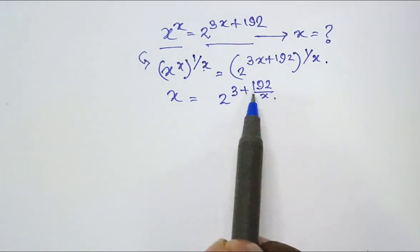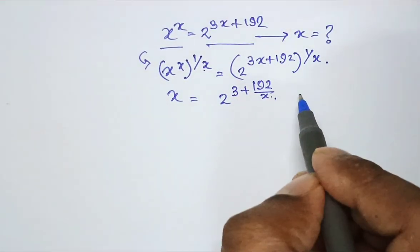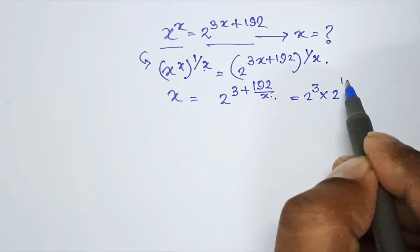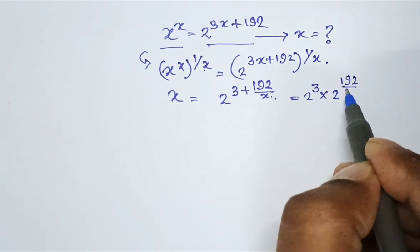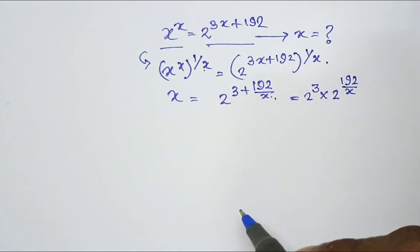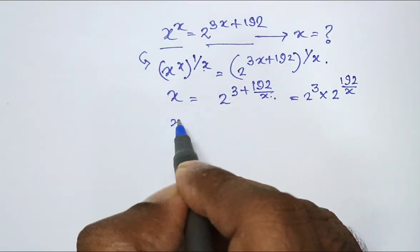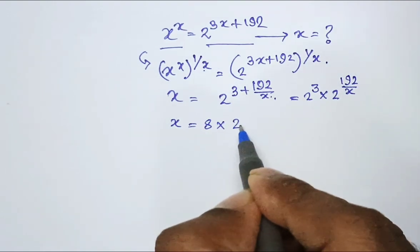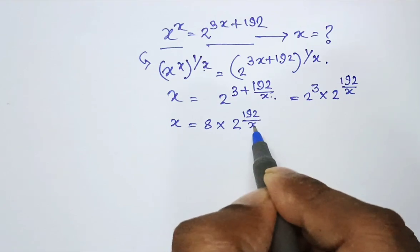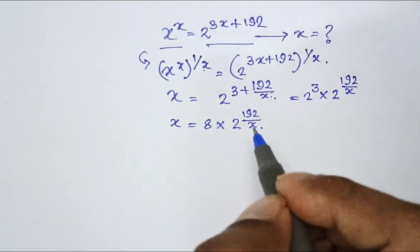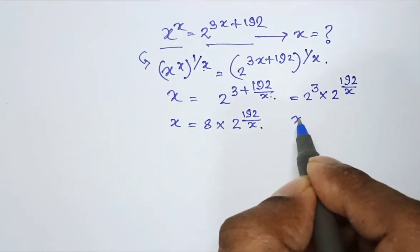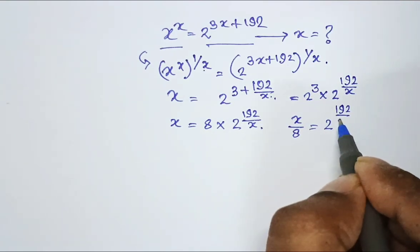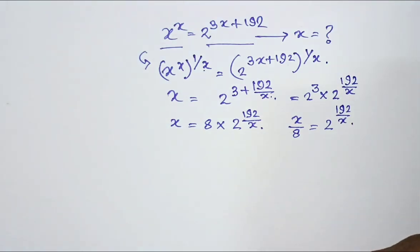Now a to the power m plus n is a to the power m into a to the power n. Then I can write it as 2 to the power 3 into 2 to the power 192 by x. What is 2 to the power 3? 2 to the power 3 is 8. So x equal to 8 into 2 to the power 192 by x. Taking 8 in the left side I am getting x by 8 equal to 2 to the power 192 by x.